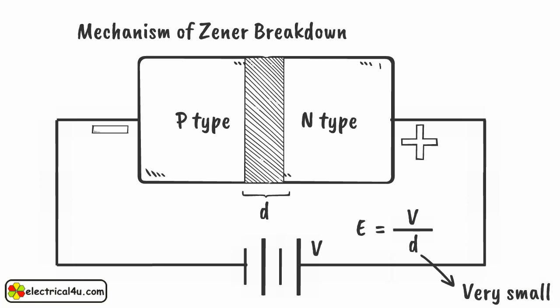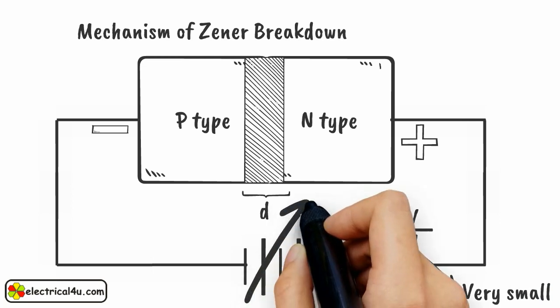If we consider P side and N side are good conductors, hence very high electric field exists across the depletion layer. If reverse applied voltage is gradually increased after a certain voltage,